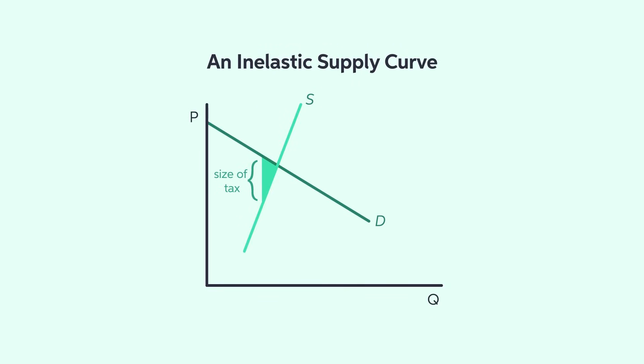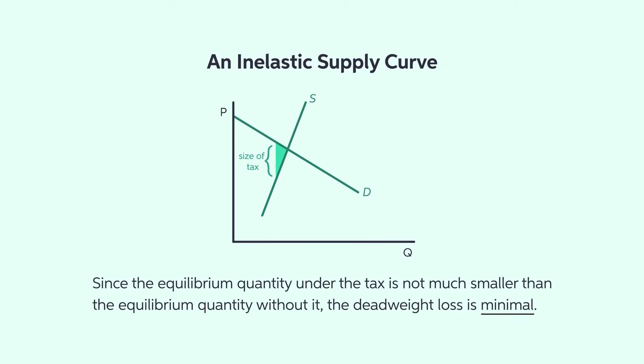The first determinant of deadweight loss is the elasticity of supply. In general, the more elastic the supply is, the larger the deadweight loss will be. In this graph, the supply curve is inelastic. When supply is inelastic, it is harder for firms to leave the market even when the tax reduces the price that sellers receive. As a result, sellers are unable to effectively reduce their quantity in response to the tax. Since the equilibrium quantity under the tax is not much smaller than the equilibrium quantity without it, the deadweight loss is minimal.